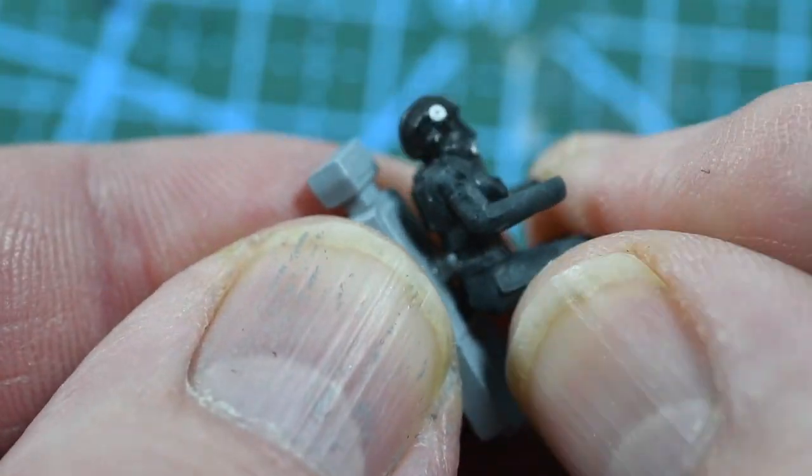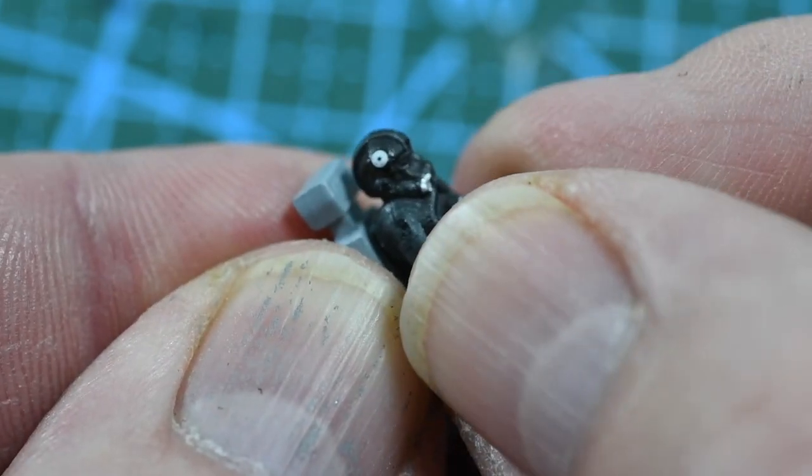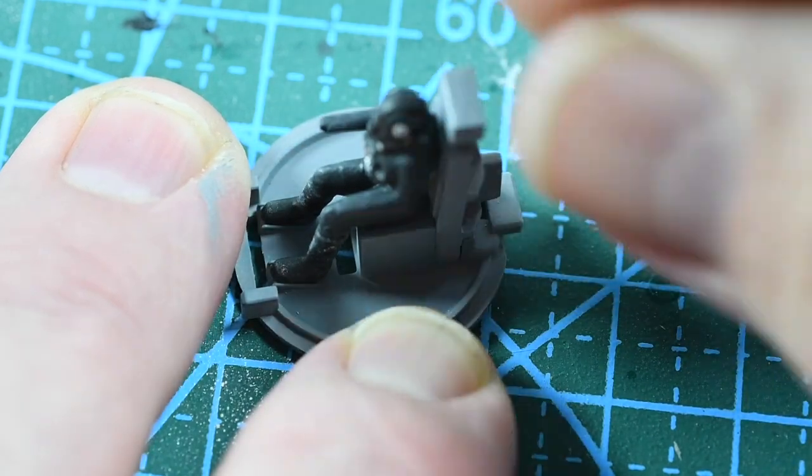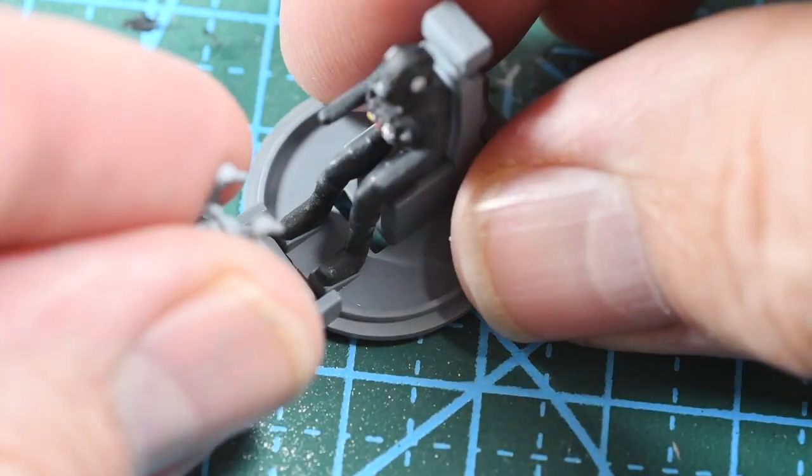I can now glue the pilot onto his seat back and then put this into the base of the cockpit. Then I can add the control column I built a moment ago.